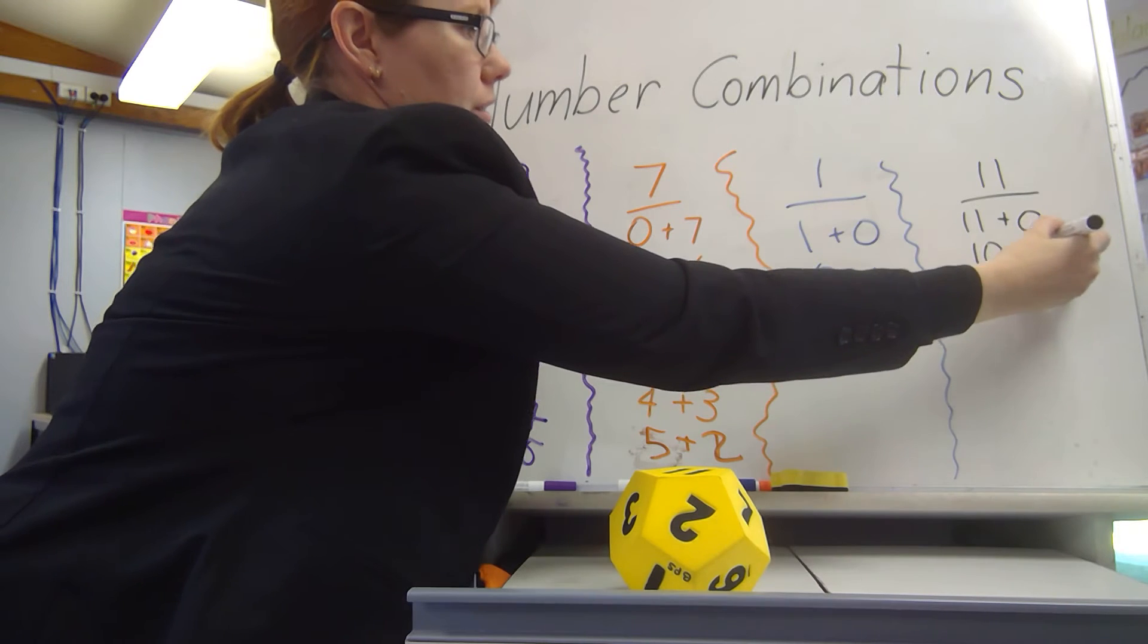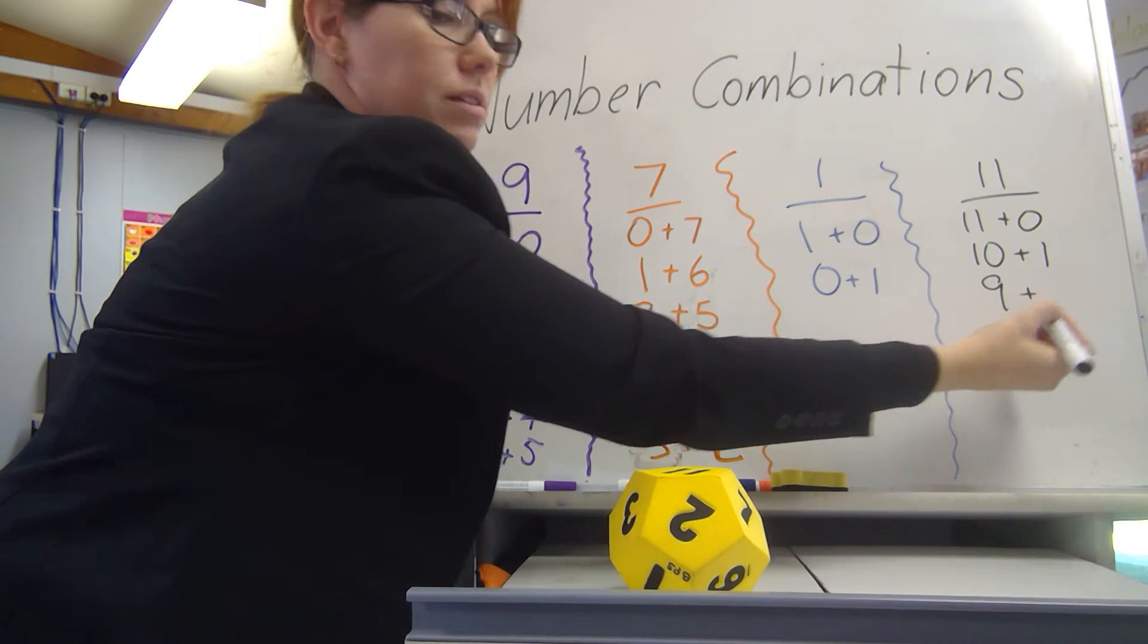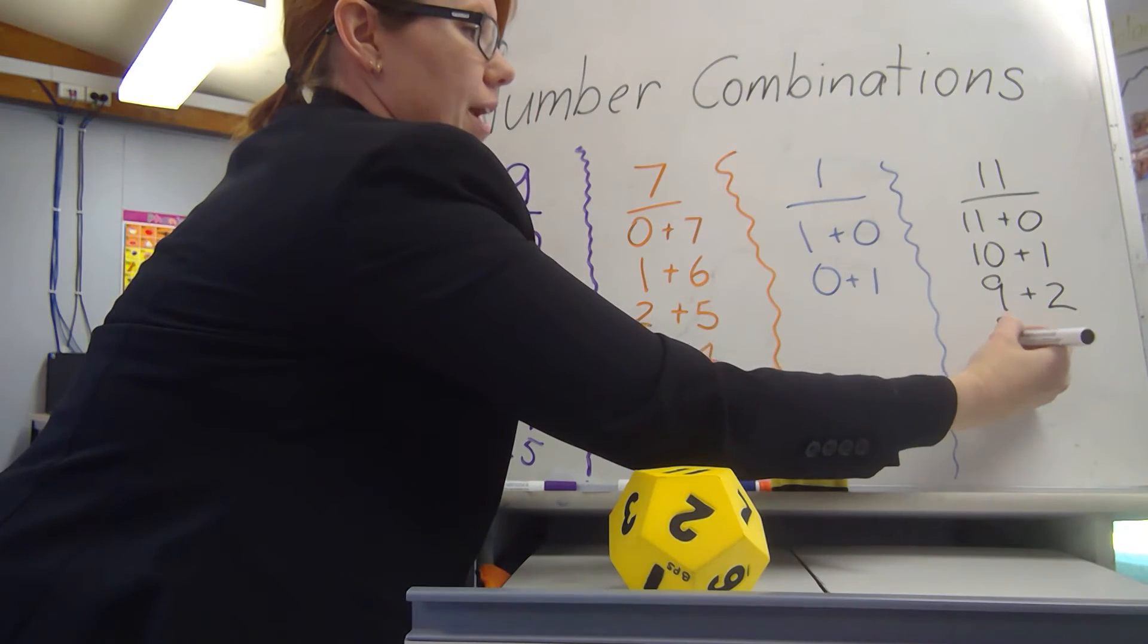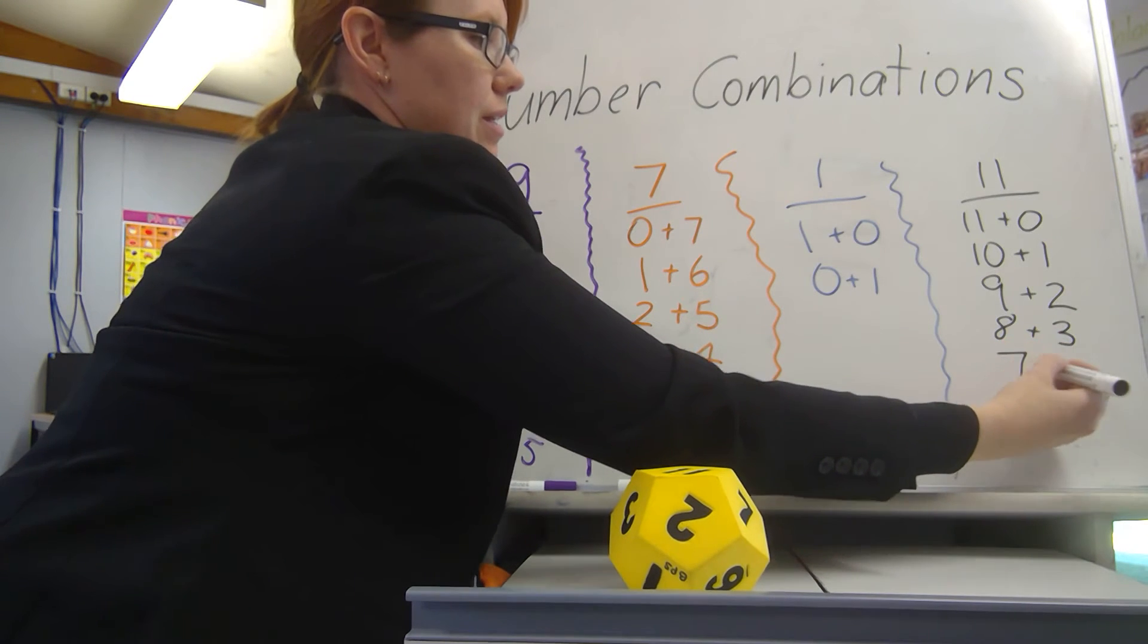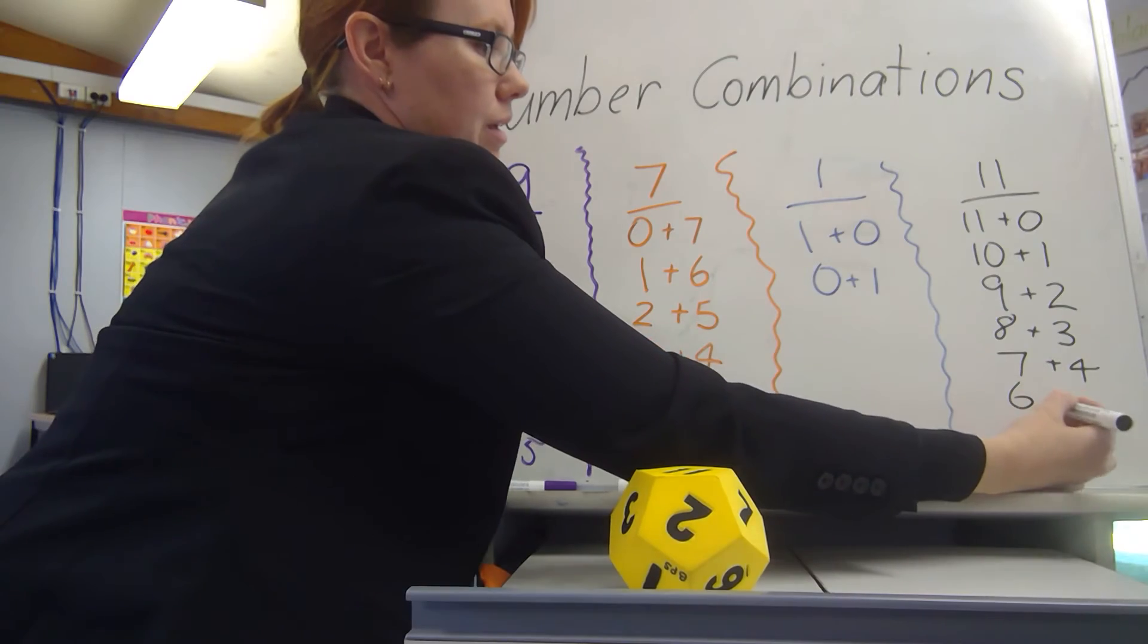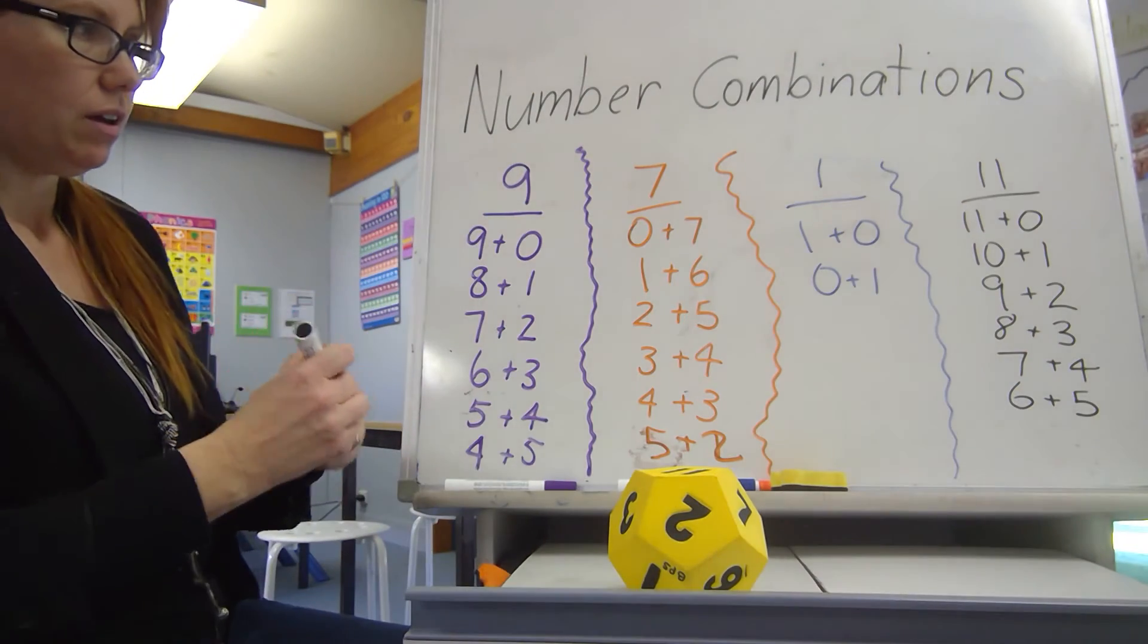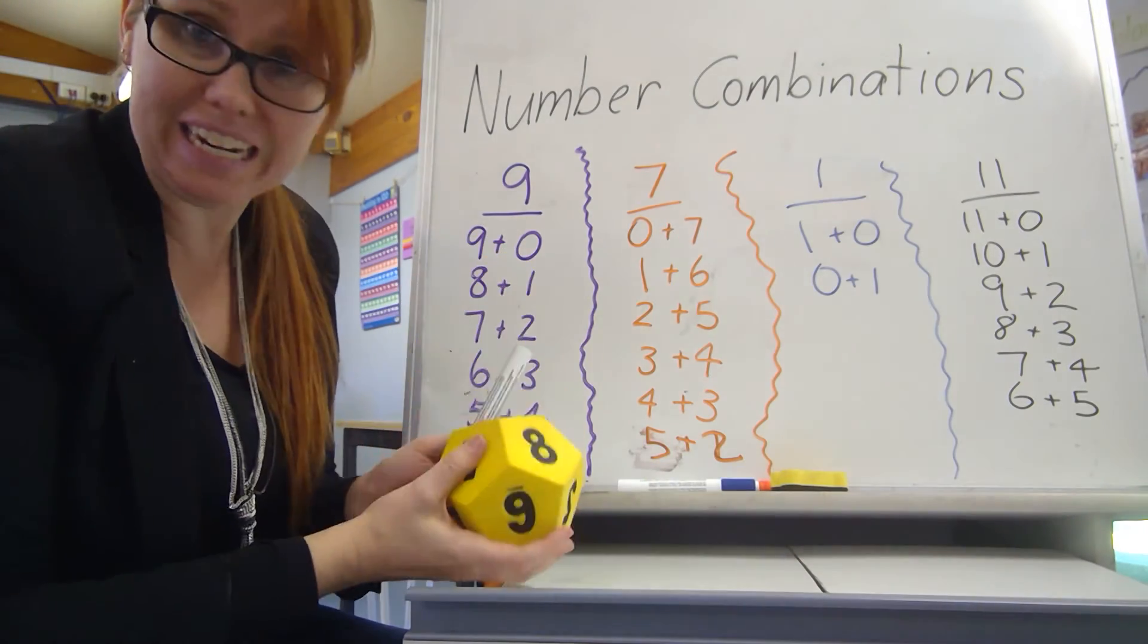10 plus 1. 9 plus how many? 2. 8 plus 3. Which means it's 7 plus 4. And then 6 plus 5. That 5 was much better. And if you keep going, you'll see the pattern. And you can do these with any number.